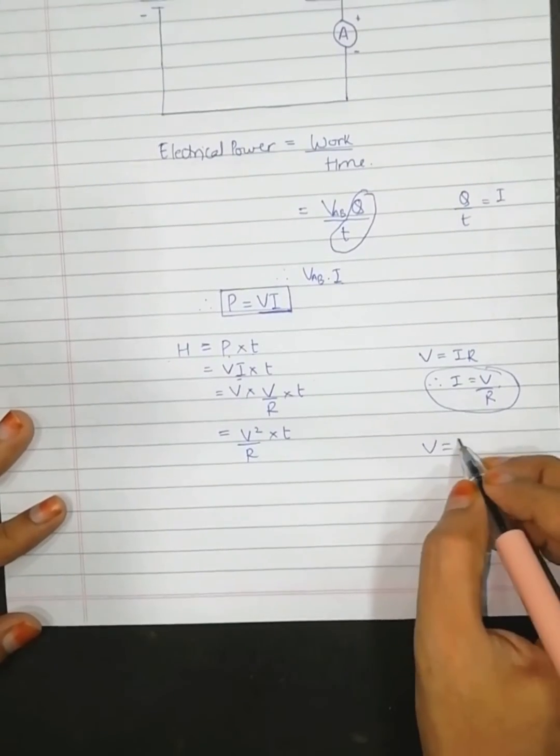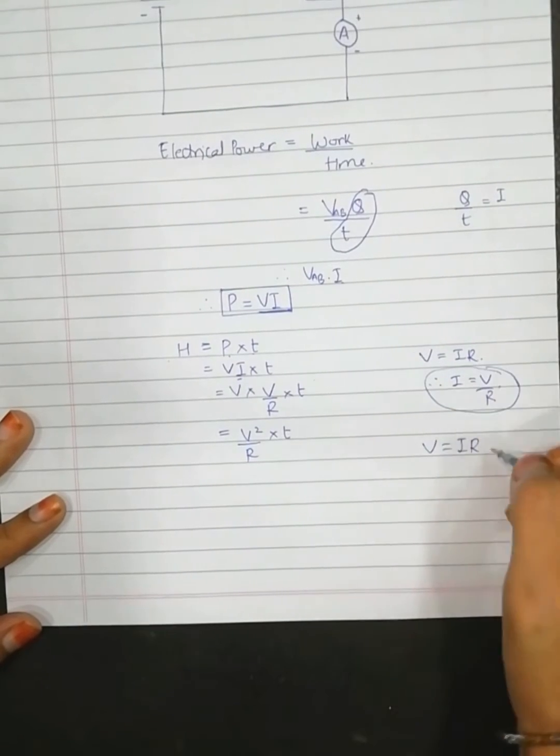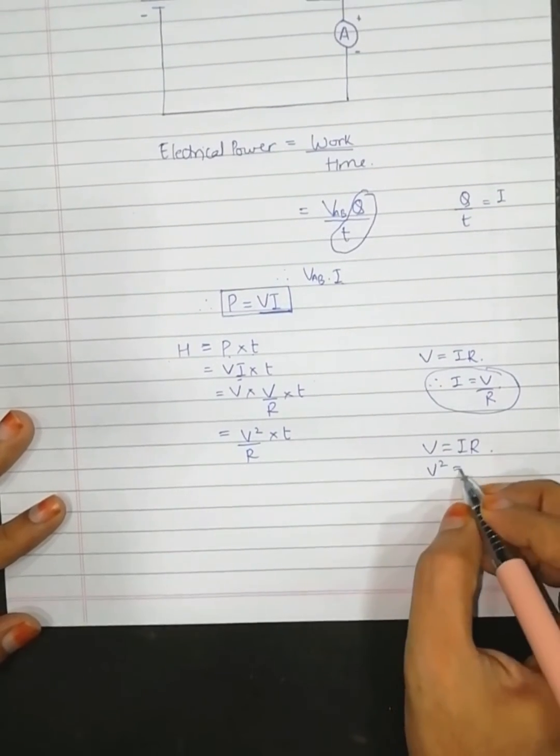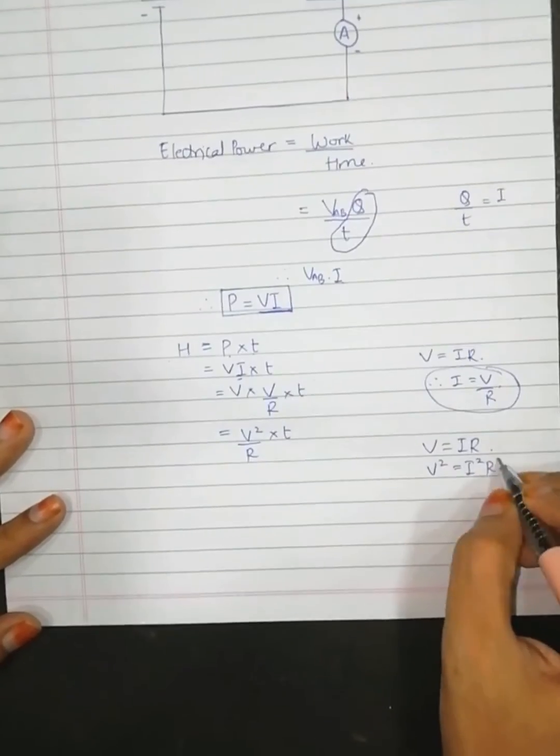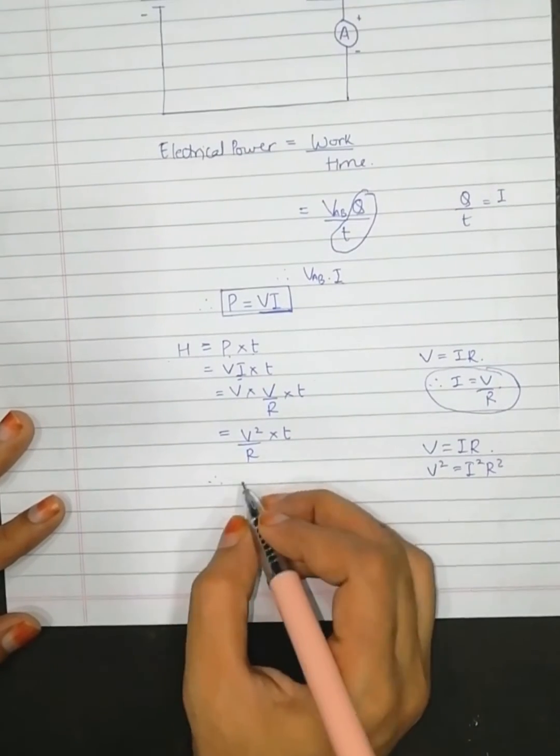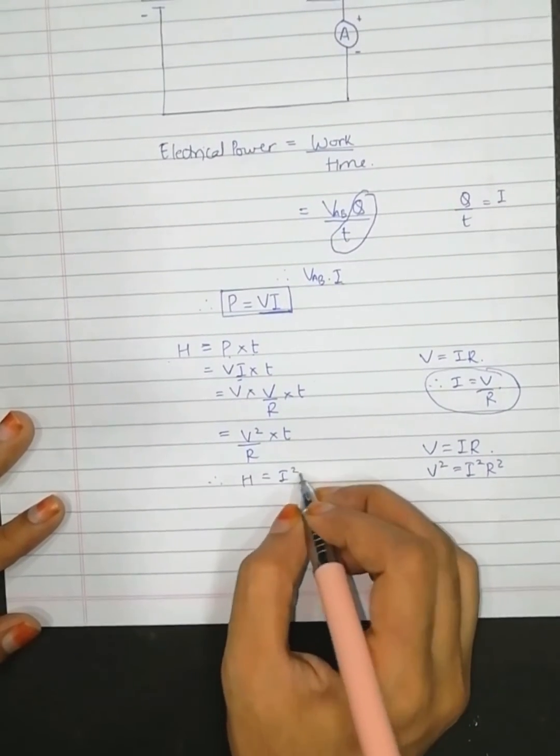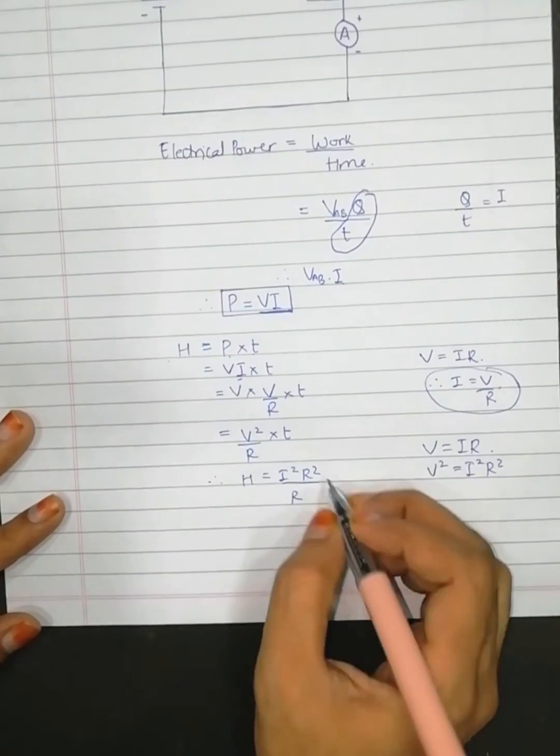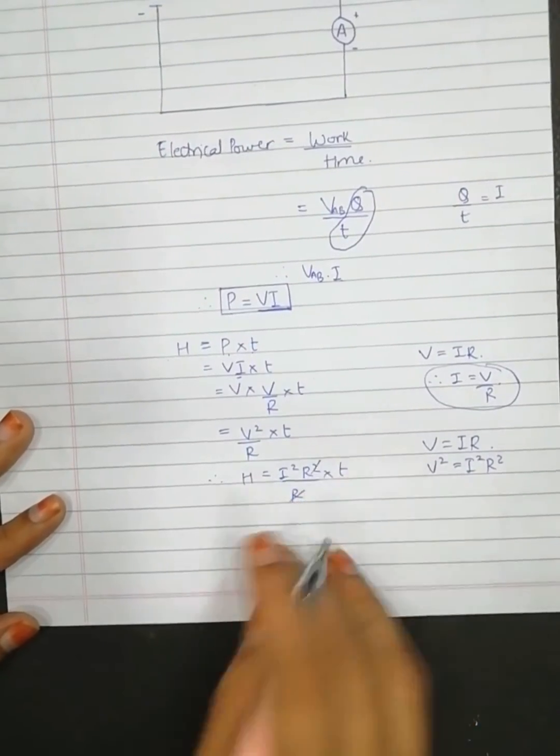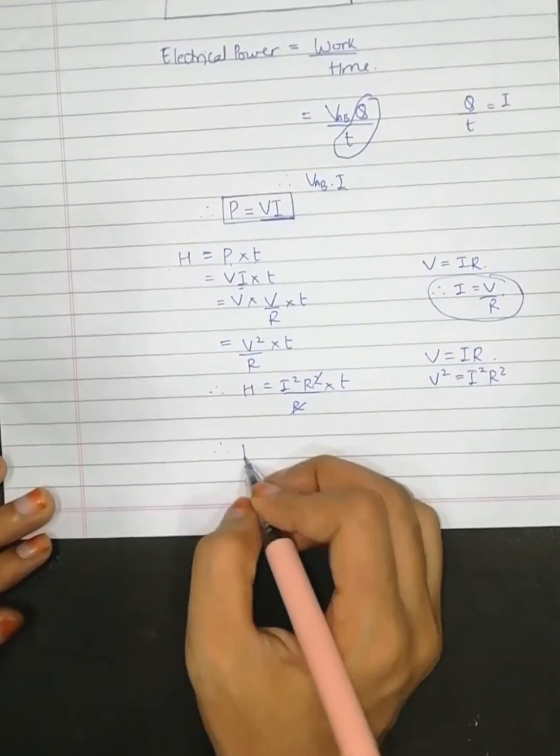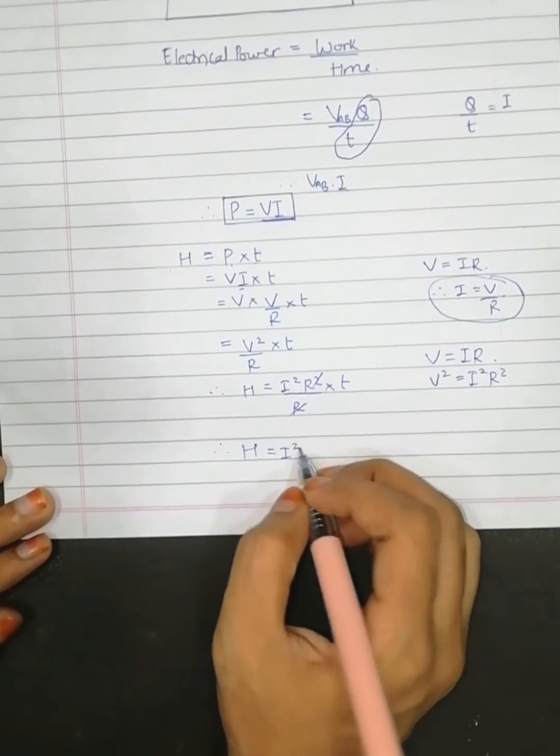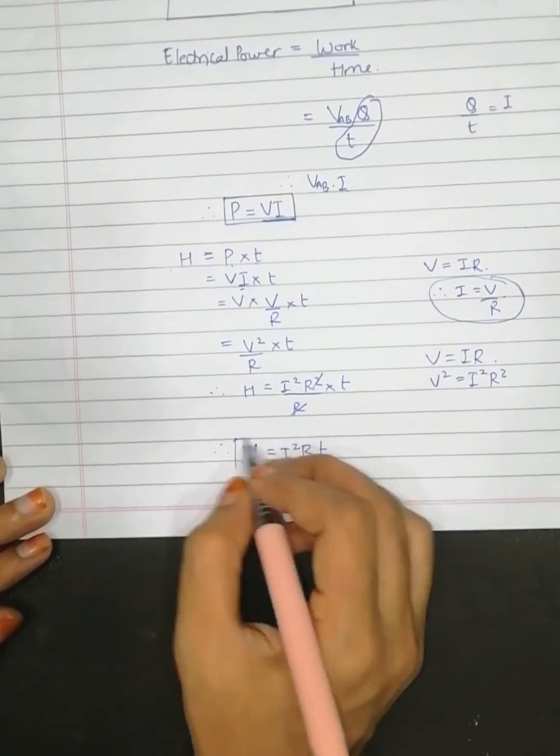Now we have V equals IR, as I already said Ohm's law. So V square will be equal to I square R square. Therefore H is equal to I square R square upon R into T. R and R will get cancelled and we will have H to be equal to I square R T. So this is Joule's law of heating.